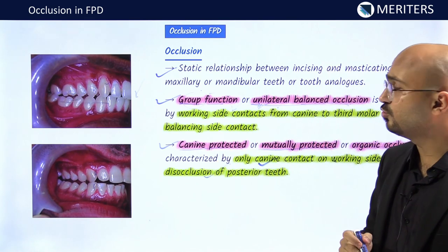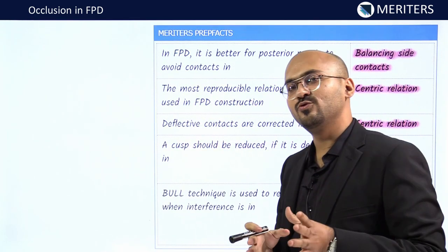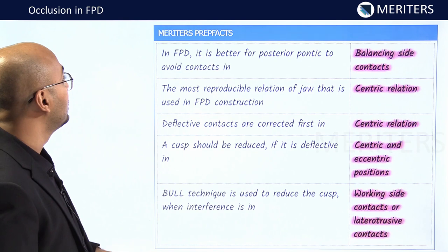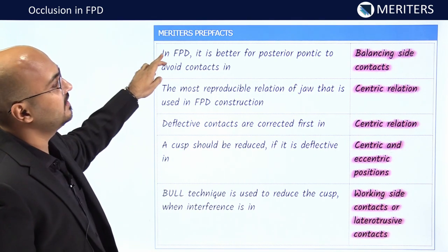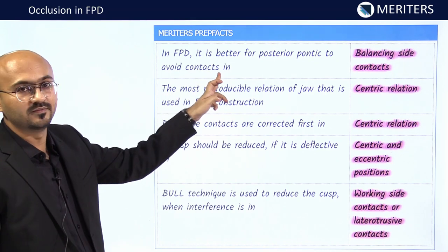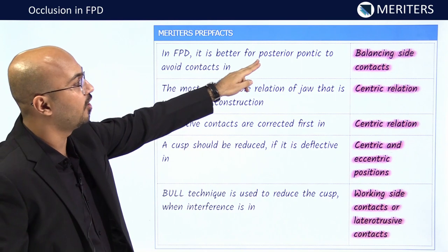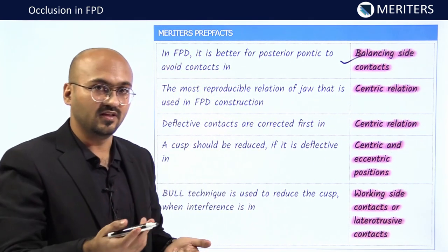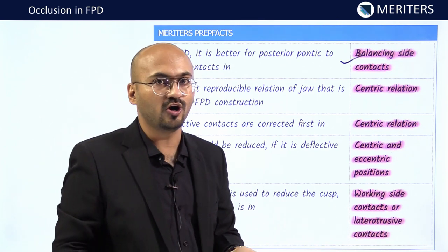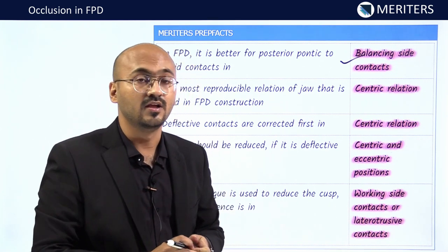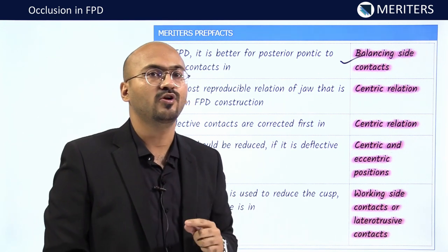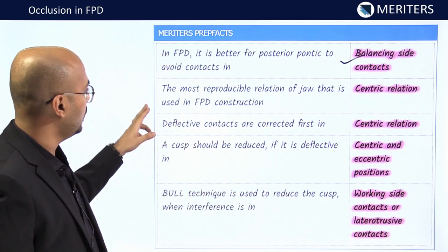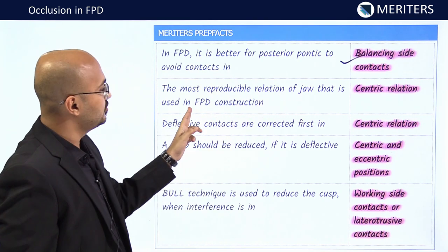Let's look at a few clinical scenarios based on Meritor's prep facts. In FPD, it is better for the posterior pontic to avoid contact on the balancing side. As established, on the balancing side there should be no contact — on the working side there will be contact. One important distinction: complete denture occlusion is different from partial denture or fixed occlusion scheme. Do not get confused between the two.